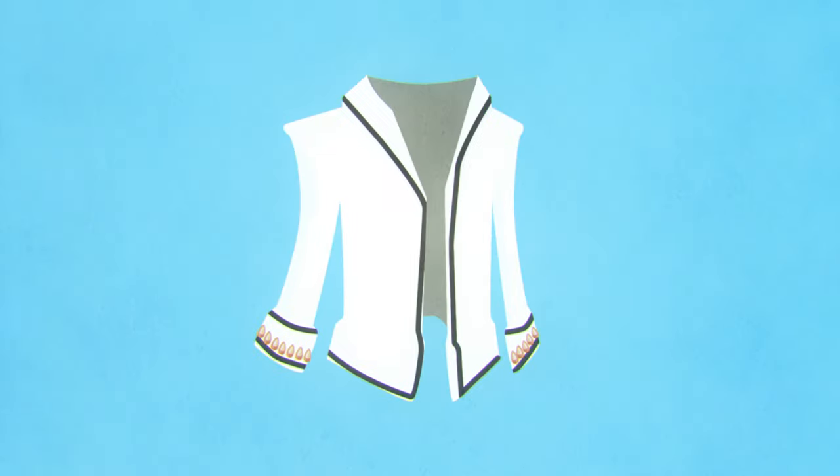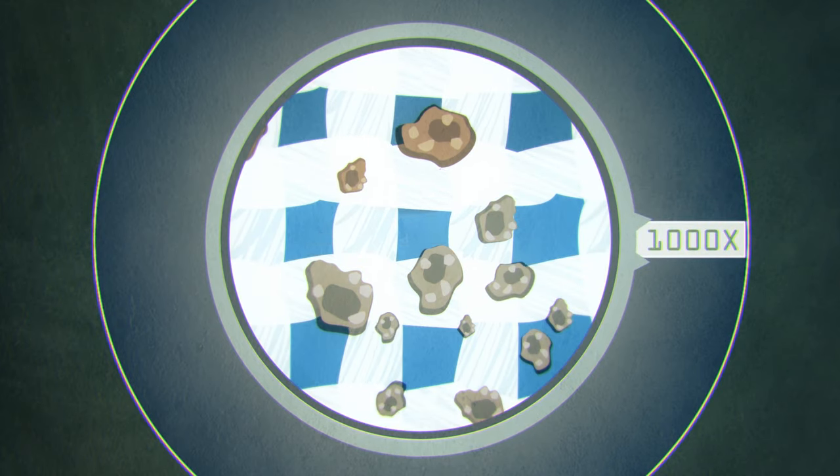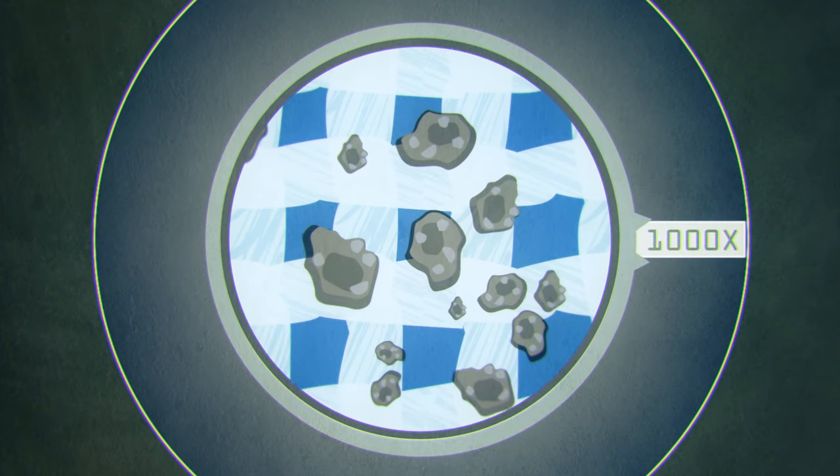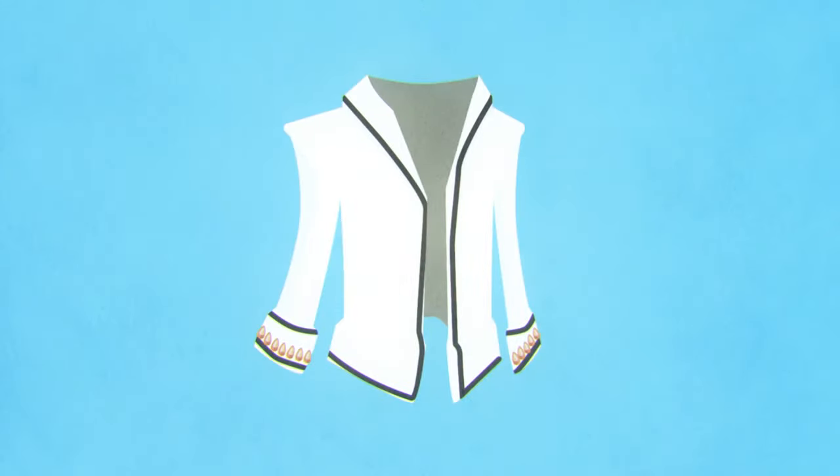But enough about the past. Green Earth pure liquid silicone suspends the dirt and carries it away without damaging the fabric. It slides right through and takes the dirt with it. It cleans clothes gently, which keeps them looking newer longer.